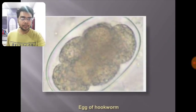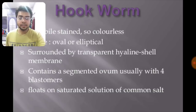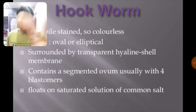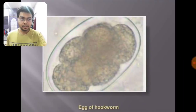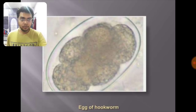The hookworm has a segmented ovum, usually with four blastomeres, sometimes even eight. These float on saturated solution and are non-bile stained — that is why they are colorless. This is an important feature to differentiate hookworms, although they are very characteristic with their segmented ovum.